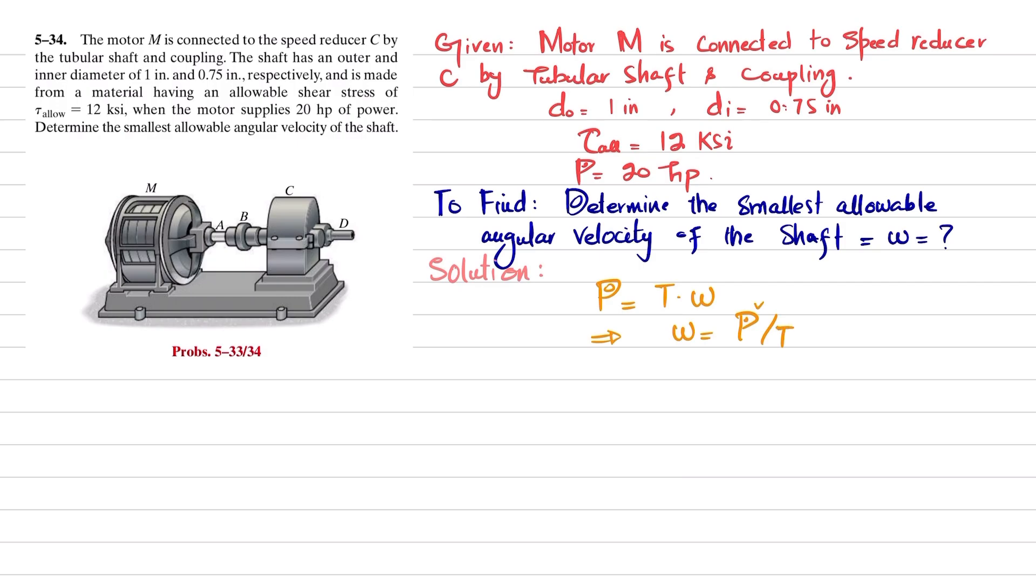We have power, we do not have torque. So what we will do is we know that we have been given allowable shearing stress is equal to T times c divided by J. So we will find J for this tubular shaft. J for tubular shaft is equal to pi over 2 times (c_o^4 - c_i^4).